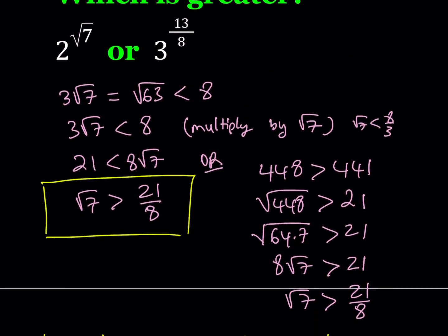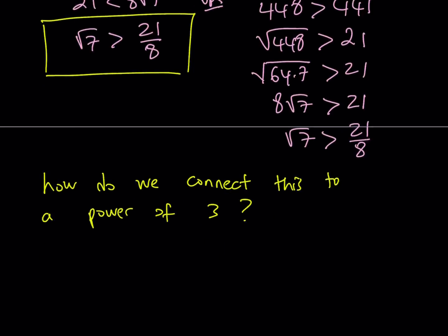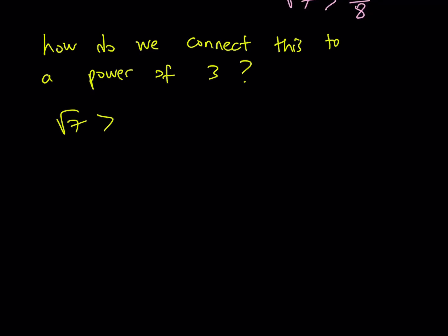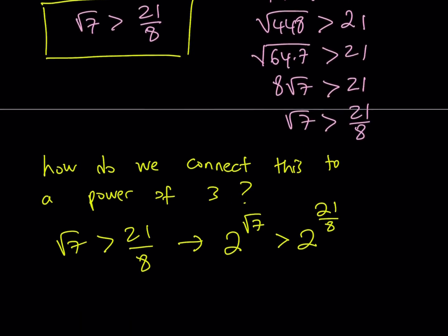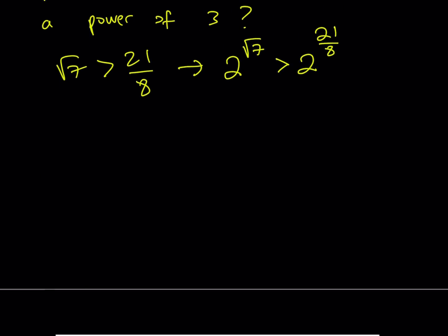So since I have 2 to the power root 7 and I do know that root 7 is greater than 21 eighths, this basically implies that 2 to the power root 7 is greater than 2 to the power 21 eighths. So now my goal is to connect this to a power of 3 because I want to compare 2 to the power root 7 and 3 to the power 13 eighths.